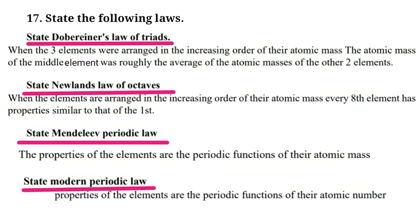Next question: state the following laws. Dobereiner's law of triads: when three elements are arranged in increasing order of their atomic masses, the atomic mass of the middle element is roughly the average of the atomic masses of the other two. Newland's law of octaves: when elements are arranged in increasing order of atomic mass, every eighth element has properties similar to the first. Mendeleev's periodic law: the properties of elements are periodic functions of their atomic mass. Modern periodic law: the properties of elements are periodic functions of their atomic number.